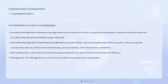In contrast, asymmetric key algorithms use a pair of keys — one for encryption and one for decryption. This pair typically consists of a public key, which can be shared openly, and a private key, which must remain confidential. The RSA algorithm is a well-known example of asymmetric key cryptography.